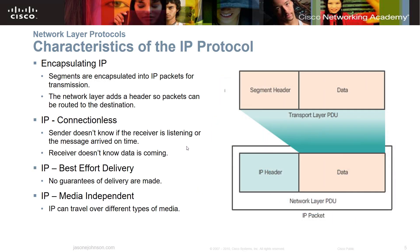Let's talk about the characteristics of the IP protocol. When we encapsulate IP, segments are encapsulated into IP packets for transmission and the network layer adds a header so packets can be routed to the destination. IP connectionless means the sender doesn't know if the receiver is listening or if the message arrived on time. The receiver doesn't know the data is coming. Think of it like dropping a letter in your mailbox — the postal service picks it up, and the recipient may or may not know the mail is coming. That's connectionless.